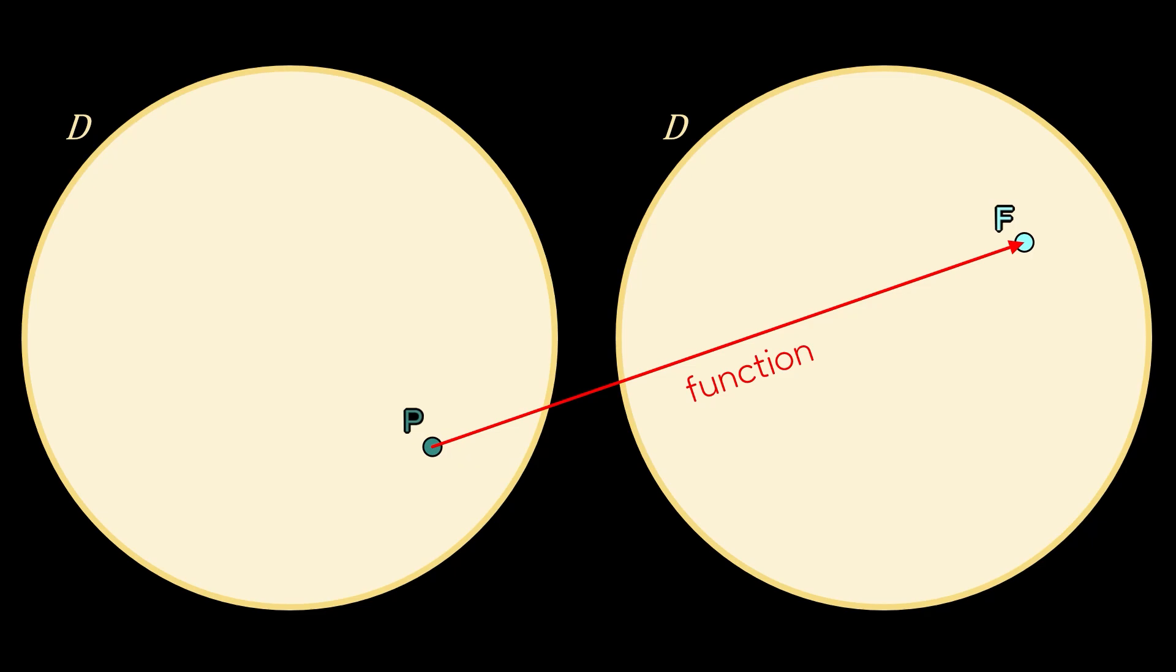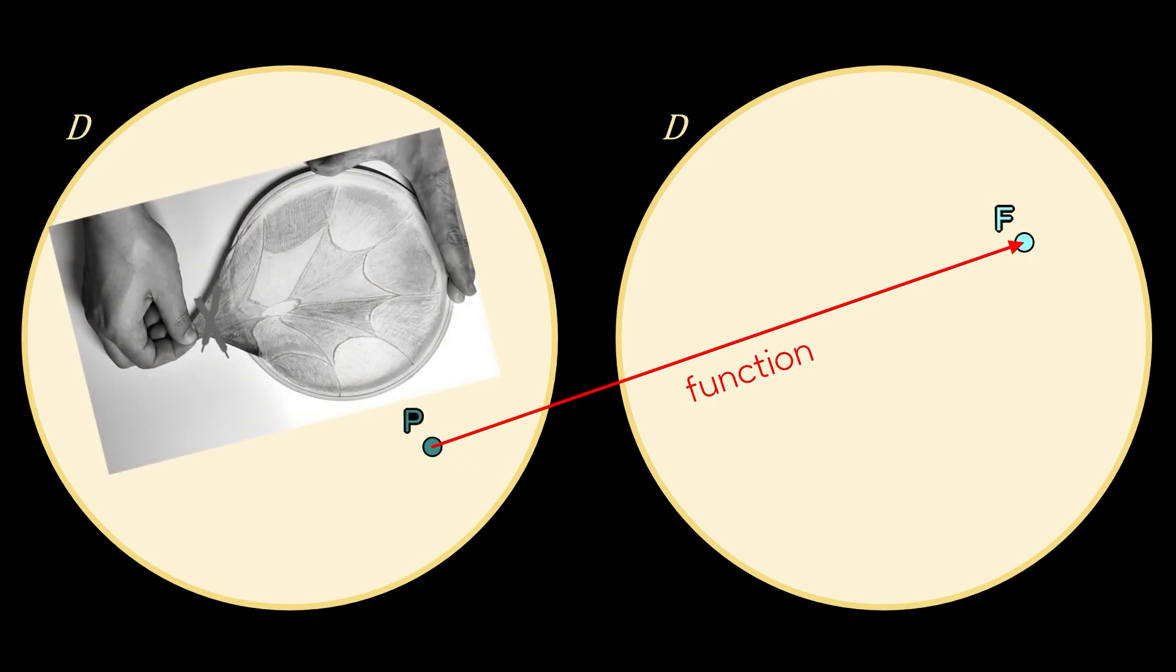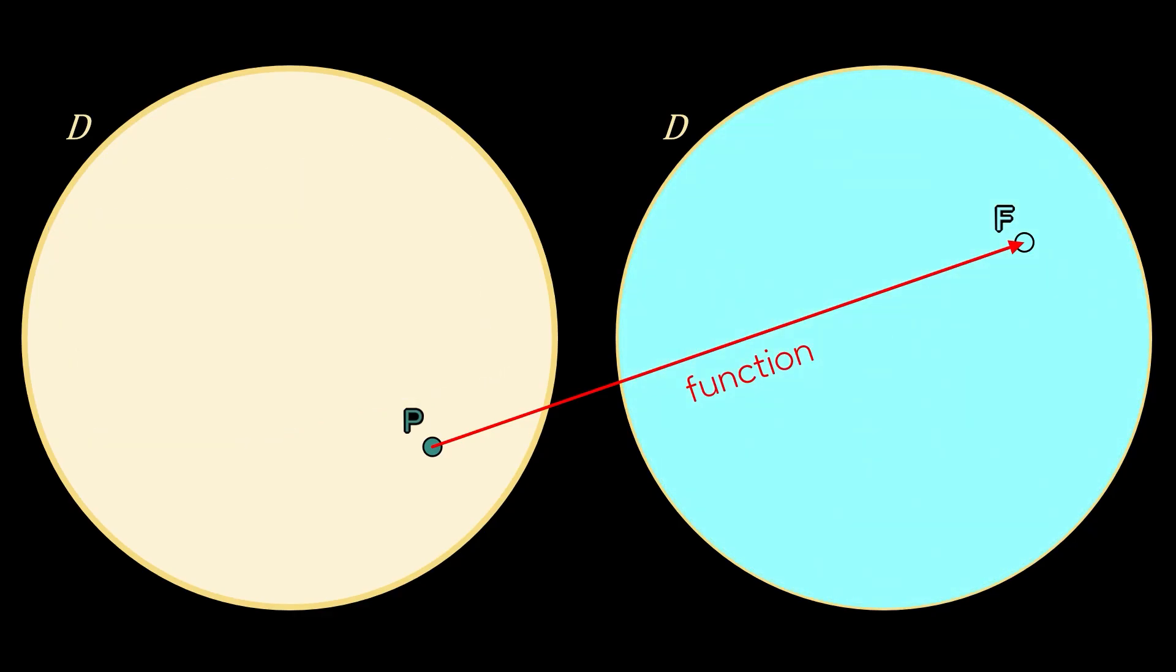The condition that the deformation never comes out of the circular frame ensures that F always remains within the disk. This function has one key property that will play a central role in the proof.